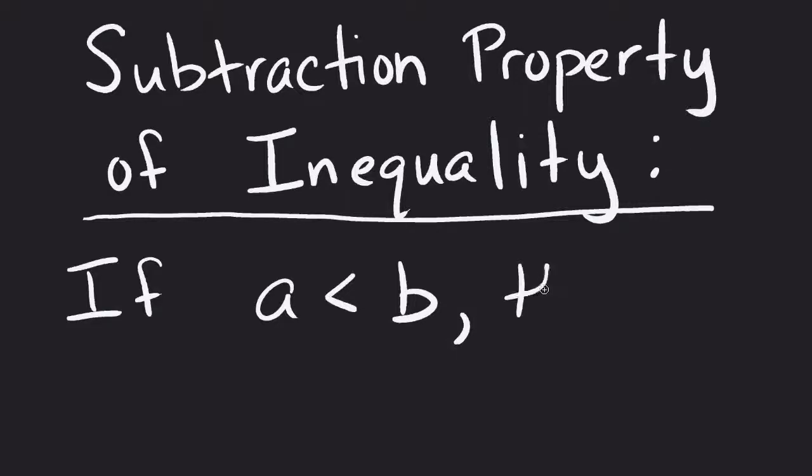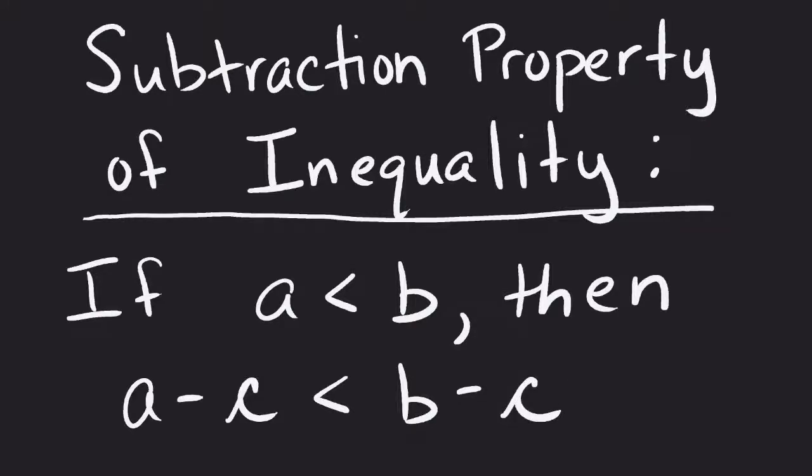If we have an inequality, then we are allowed to subtract a value, let's say C, from both sides without affecting that inequality. It's going to stay exactly how it was at the beginning. The inequality sign will not be affected by us subtracting a number.